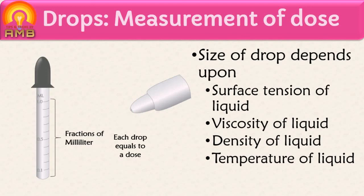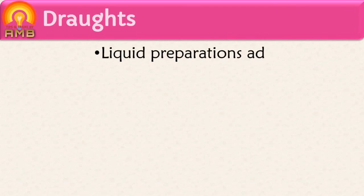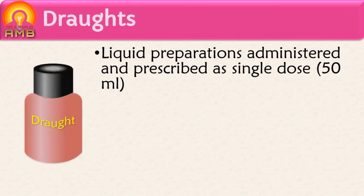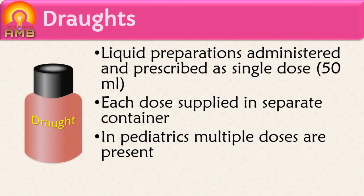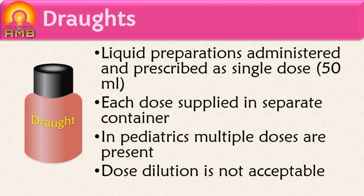The last monophasic dosage form for internal administration is draughts. Draughts are liquid oral preparations administered as a single dose of 50 ml and are prescribed as a unit or single dose — meaning each dose is supplied in a separate container. In case of paediatrics, multiple doses are present since the normal pediatric dose is about 10 to 15 ml. Dilution of the dose is not accepted in draughts as it affects the stability of the solution.